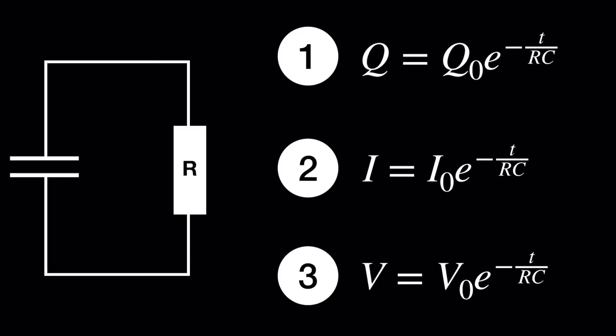So let's start with the charge equation, which can be used to derive the other two. A good place to start is by considering Kirchhoff's loop rule. Assign V1 to the capacitor and V2 to the resistor, then draw a loop.